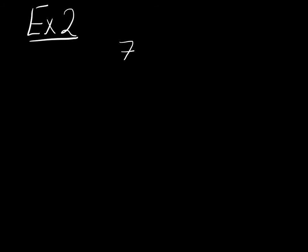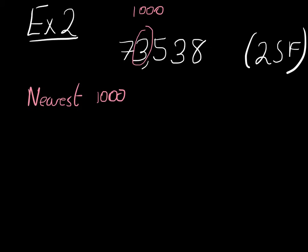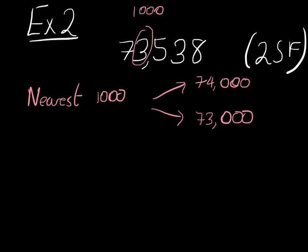Same number: we have 73,538, and this time we're rounding it to two significant figures. The second significant figure is the 3, which is in the thousands column. So the question is: what's the nearest thousand to this number? Our options are either 74,000 or 73,000. 74,000 is nearer because 538 brings us closer to 74,000 than to 73,000. So the answer is 74,000 to two significant figures.